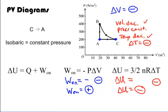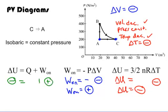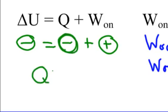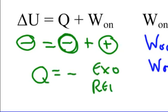Coming back to the first law: delta U equals Q plus W. Internal energy is negative; work done on the gas is positive. So Q plus a positive must equal a negative, meaning Q has to be a large negative number. A negative Q means exothermic — we released heat during this segment.